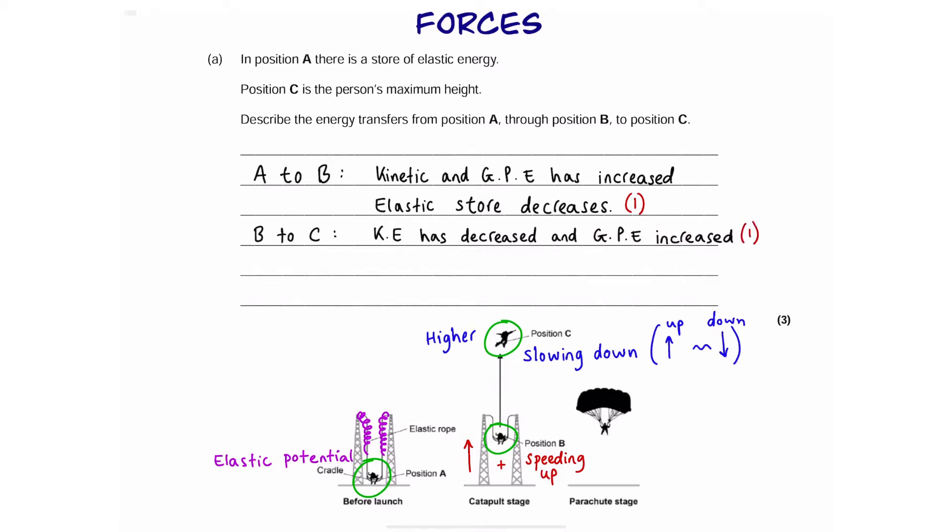Now, for the third mark, we have to think about something that's not visible. Now, we've explained A to B and B to C. So, that's given us two marks. But the question wants one more point. So, we have to explain something that we can't see visibly in this diagram. An example could be because of friction.